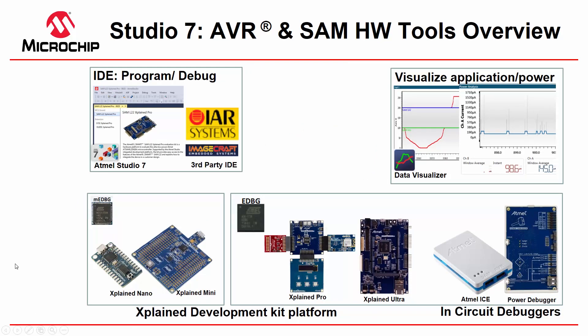Looking at the overview of this development kit platform, you can see the Mini Embedded Debugger is on the Nano and the Mini, and the Embedded Debugger platform is for both the Pro and Ultra. The same functionality is also available in the standalone debuggers, the Atmel ICE and the Power Debugger. All these debugging platforms communicate over CMSIS-DAP to the IDE, Atmel Studio, but this also supports IAR and ImageCraft as third-party IDEs.